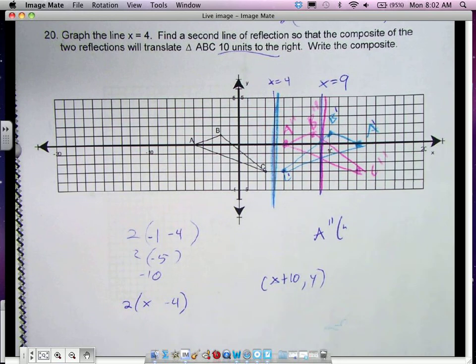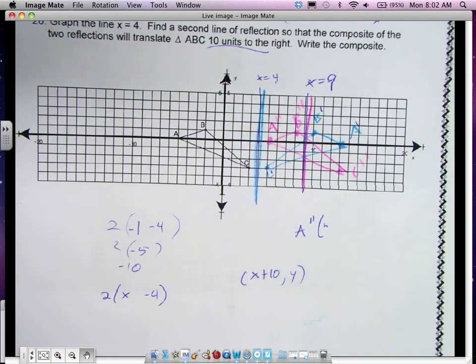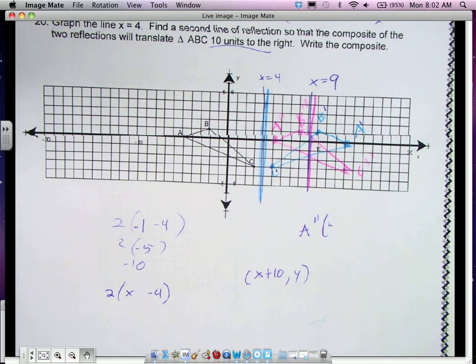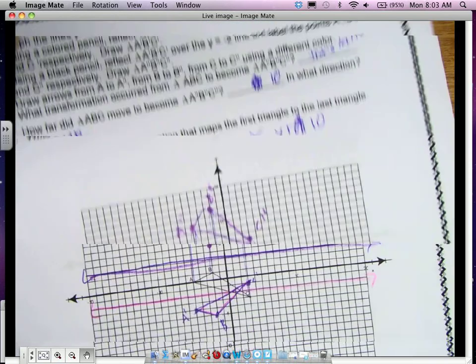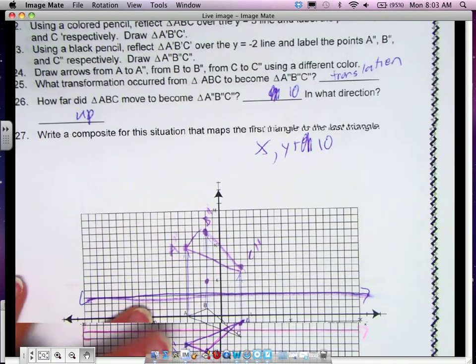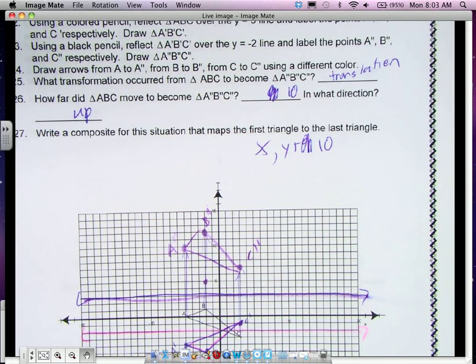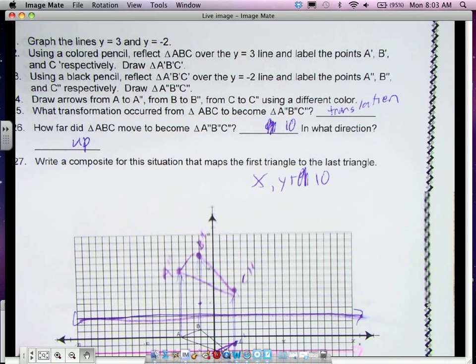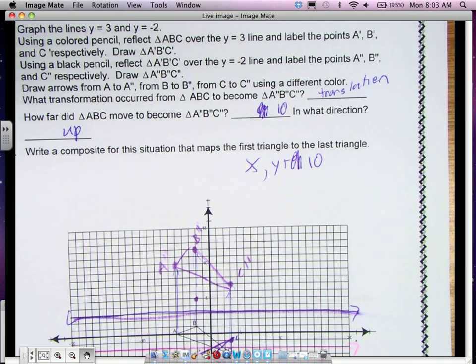Let's look at the next one. This one, instead of translating right or left, we translated up or down. We reflected over y equals 3 and y equals negative 2, and we found that it was a translation 10 units up. So we get x comma y plus 10.